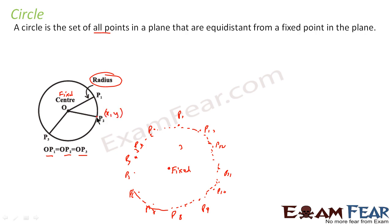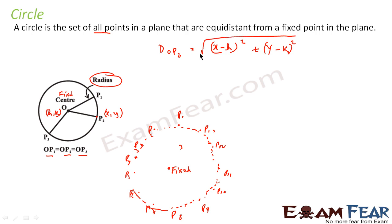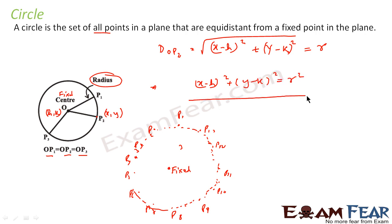Let this point be (x, y) and let the center be (h, k). The distance between O and P2 is equal to the square root of (x − h)² + (y − k)². And we are saying this distance is nothing but the radius r. Going by the definition, if you square this, what you get is (x − h)² + (y − k)² = r². We have taken the fixed point (h, k), and any point (x, y) that is at a distance r from (h, k).